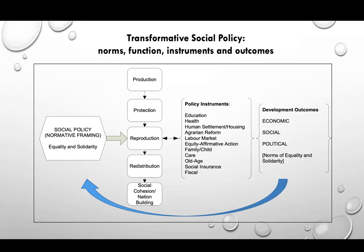The diversity of social policy instruments ranges from education to healthcare services, social housing, agrarian reform, labor market policy, affirmative action, family and child policy, social care provision, old age support, social insurance, and fiscal policy. Each of these instruments can tap multiple tasks of social policy. The public provision of quality education from pre-primary to tertiary level could simultaneously tap the production, protection, and social cohesion tasks of social policy.